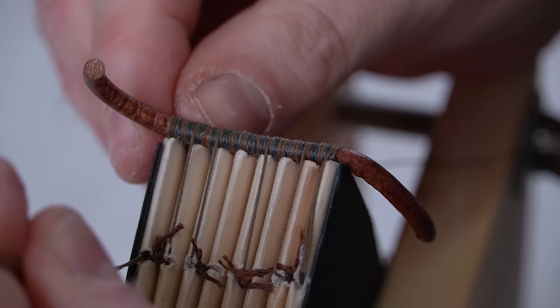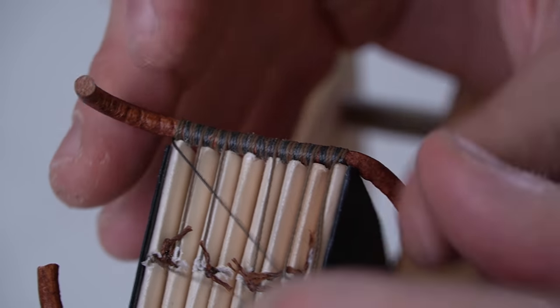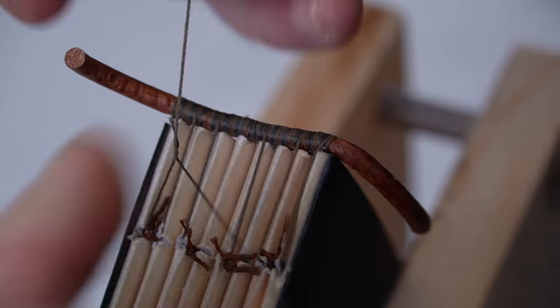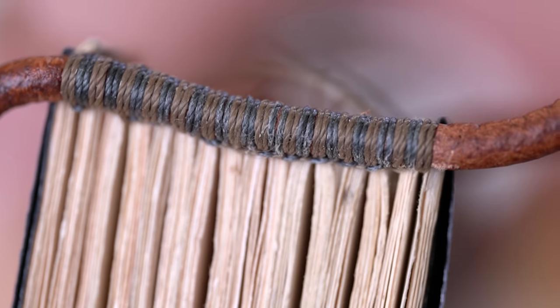And then once you get to the end, you go down and through your signature and tie it off randomly. Now I say randomly because I really wasn't sure how to tie it off, so I just kind of winged it. You're gluing all this down anyways. It should be fine. Just tie it off.